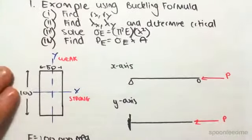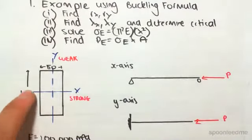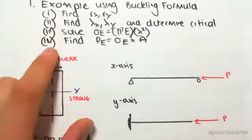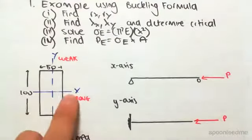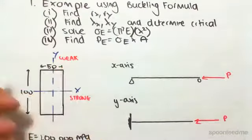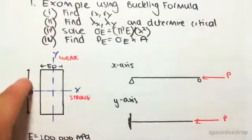So this is our problem. We have a section which is 100 deep by 50 wide. It's x and y. We call this x the strong axis and y the weak axis. That's just because we've got the longer length there.